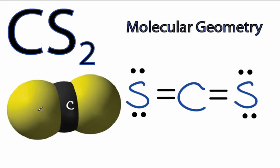We have the carbon in the center, and then on either side, we have the sulfur atoms. This is called a linear molecular geometry.